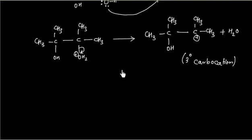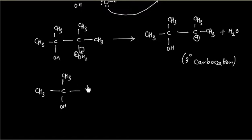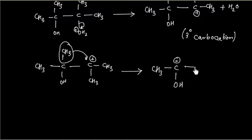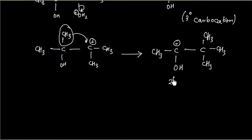The next step is slightly unusual. What we do in this case is shift one alkyl group — in this case, we have a methyl group. So we can shift this methyl group to this carbon, even though this is already a tertiary carbocation. The resulting carbocation is a secondary carbocation attached to 2 carbon atoms, so this is a 2-degree carbocation.